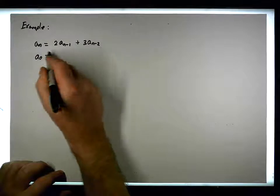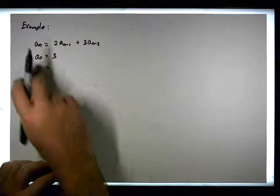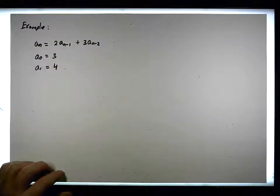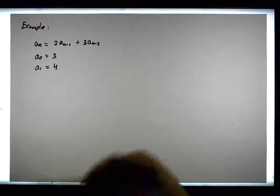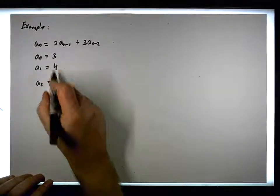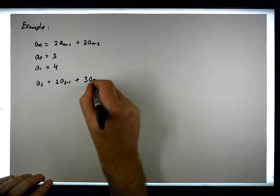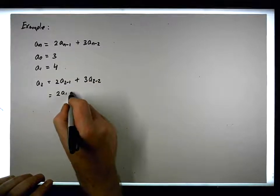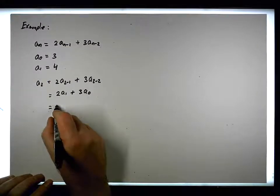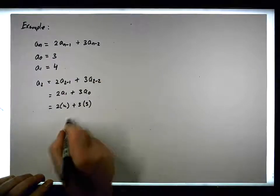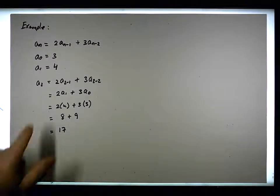To define this recurrence relation we need two starting points. So we need a₀ — let's say a₀ is equal to three — and we also need a₁, so the next term, because we need two previous terms to find the next term. Let's say a₁ is equal to four. So the sequence starts off 3, 4. For a₂: two times a₁ plus three times a₀, which is two times four plus three times three, giving us eight plus nine, so a₂ = 17.